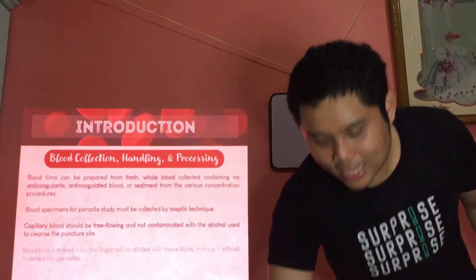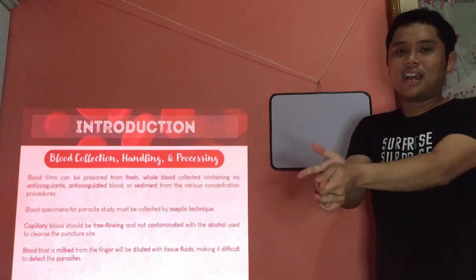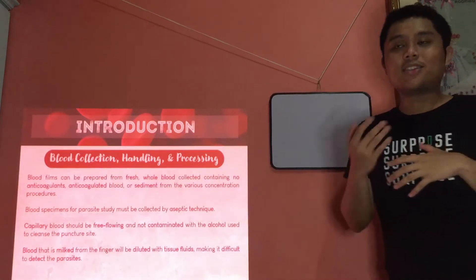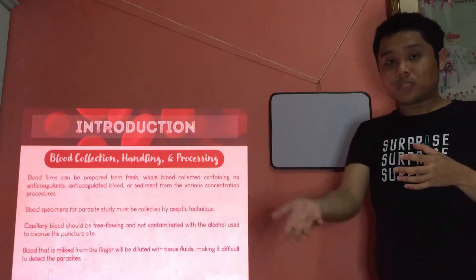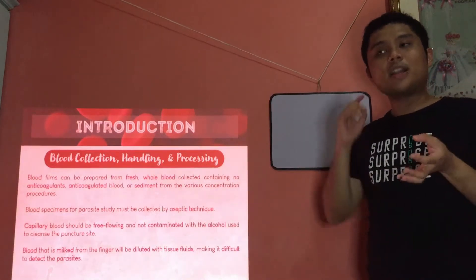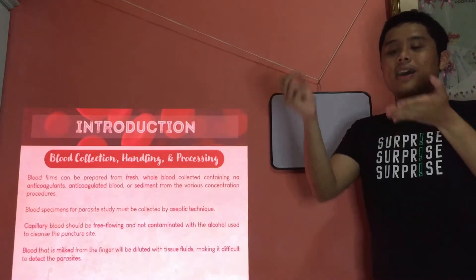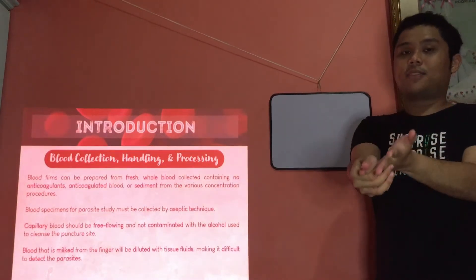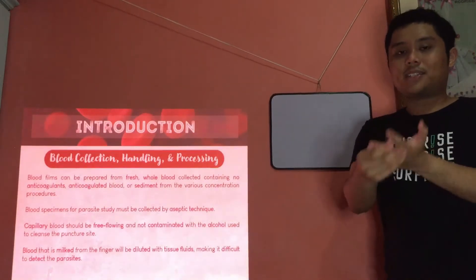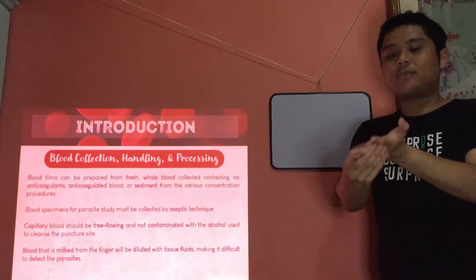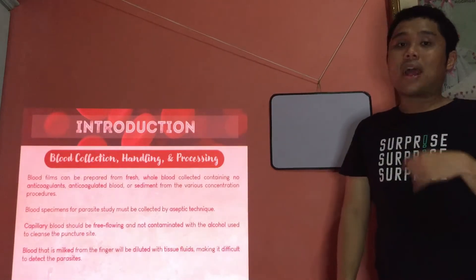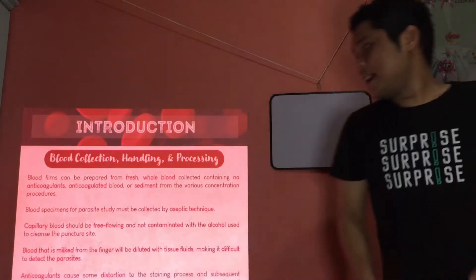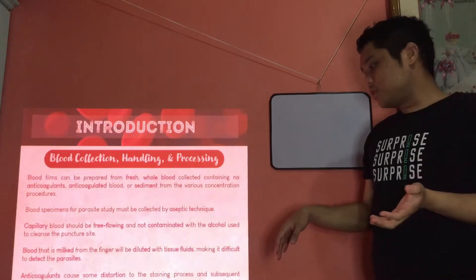Specimens should be collected by aseptic techniques. For capillary blood, it should be free-flowing and not contaminated with the alcohol used in disinfecting, because alcohol can distort your parasites. If blood is coming from milking — meaning difficult draw — you can introduce excess tissue fluid which can dilute your blood specimen, making it difficult to detect your parasites.